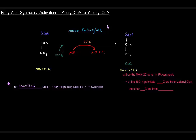Malonyl-CoA is the main two-carbon donor because it contributes almost all the carbons to the palmitate we're making. Of the 16 carbons in palmitate, 14 of those carbons are from malonyl-CoA, and the other two carbons are from acetyl-CoA. That's because the first condensation reaction brings an acetyl-CoA and a malonyl-CoA together, and after that, every single two-carbon donor is a malonyl-CoA. I hope that video was helpful — thank you for watching.